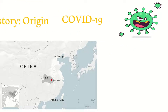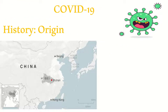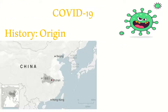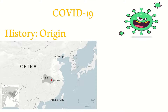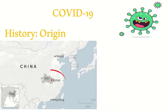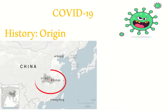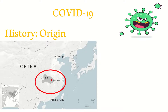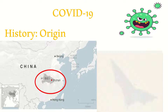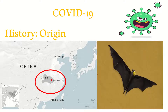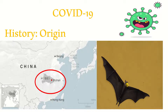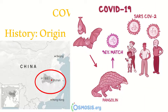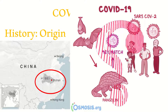This coronavirus was first identified in December 2019 in Wuhan, China. It is thought to have come from bats. The popular theory is that this coronavirus originated from bats and then moved to humans through pangolins or other animals.